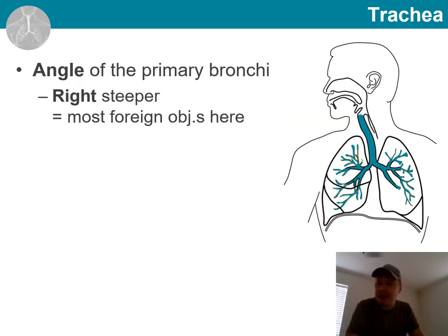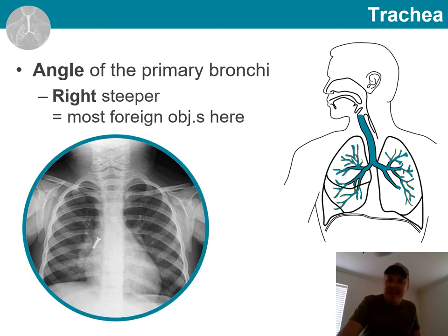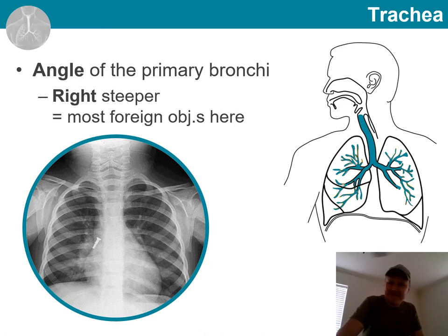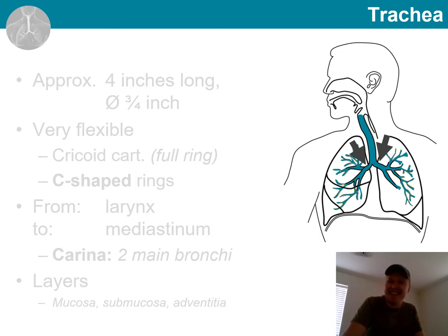Another clinically relevant point is the angle at which the primary bronchi enter the lungs. The angle is typically steeper for the right primary bronchus, and therefore it is the right lung where most foreign objects normally end up.